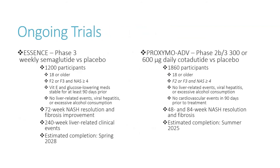Looking at some ongoing trials, the first is the ESSENCE trial, a Phase III weekly semaglutide versus placebo study with a goal to enroll 1,200 participants. It has very similar inclusion and exclusion criteria to the previous trial. Its endpoints include 72-week NASH resolution and fibrosis improvement, as well as 240-week liver-related clinical events. These clinical events would include progression to cirrhosis, mortality, a MELD score greater than 15, liver transplant, or any hepatic decompensation leading to hospitalization. This trial will be beneficial to show the long-term benefits of a GLP-1 for NAFLD and NASH.